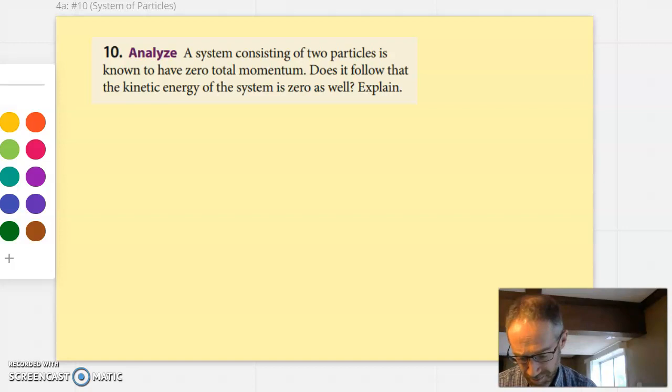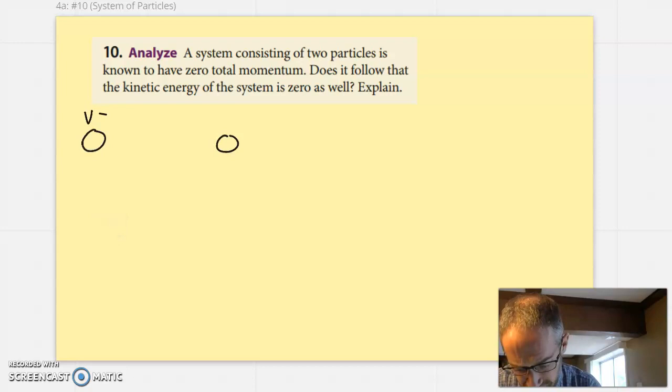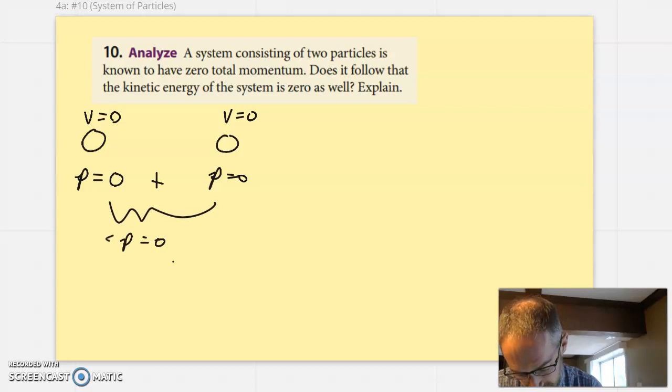You could have two things that are not moving, zero velocity, zero velocity. We would call this the trivial case where the momentum is zero because the velocity is zero, so the sum total of everything here is zero. Now, if that's the case, then of course the kinetic energies will also be zero because we have no velocity. So that's one way, but it doesn't necessarily have to be that way, and that's why the answer to this question is no.